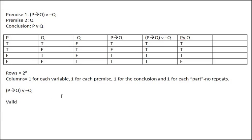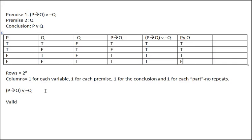If we had found a false conclusion and all true premises, the argument would be invalid. But in this case, the one row where the conclusion is false has one true premise and one false premise — so we don't have all true premises. Therefore the argument is still valid. That's an example of a basic two-variable truth table.